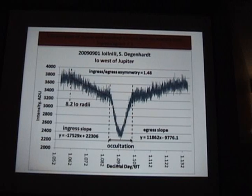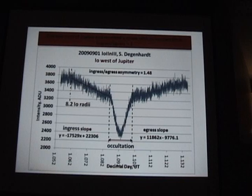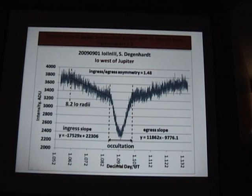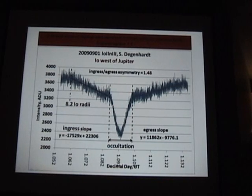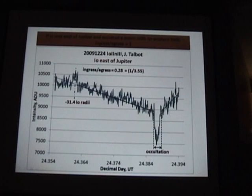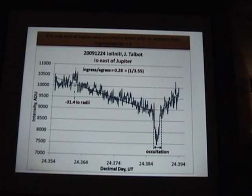There was a consistency we found in the asymmetry — which, by the way, asymmetry in itself highlights that it can't be camera response, because it would be symmetrical around the merging event if it were camera response; there would be no way for it to be asymmetrical. What we found was that if Io was west of Jupiter and the occulted moon occurred on the western limb, the ingress over egress ratios were greater than one. If Io was east of Jupiter and the occulted moon's western limb, the ratio was less than one. Put simply, the Jupiter-facing limb presented the longer extinction event.